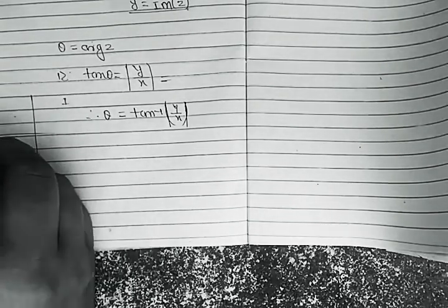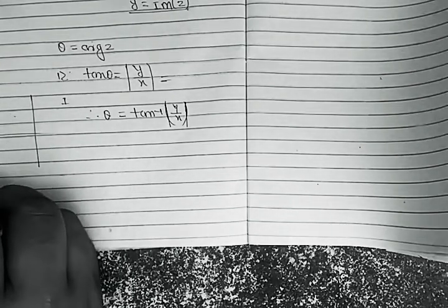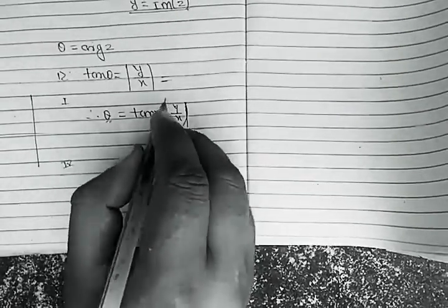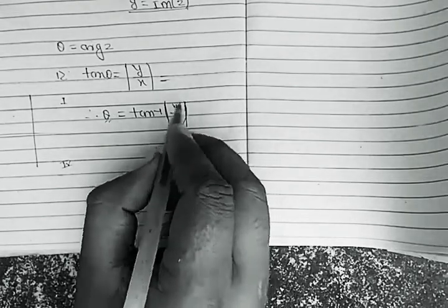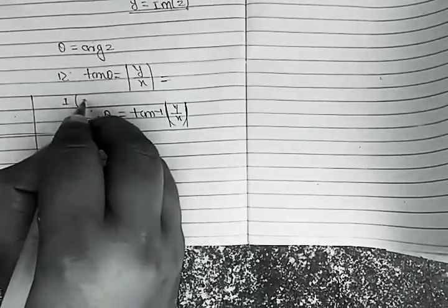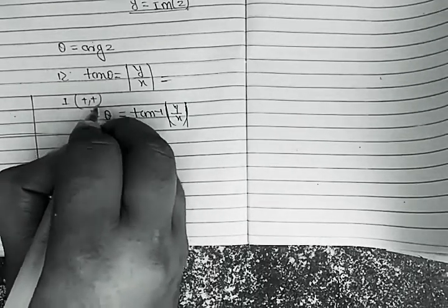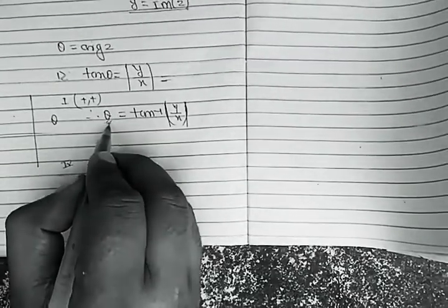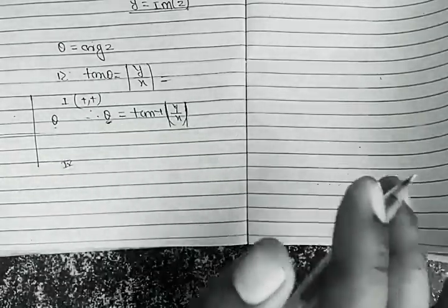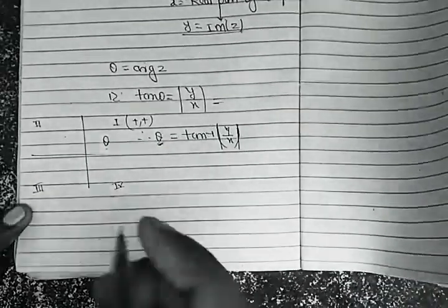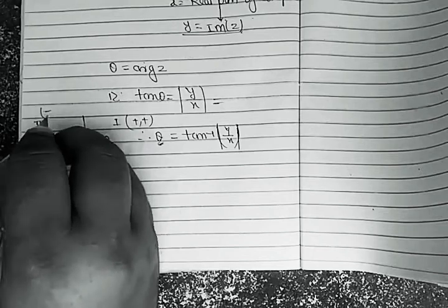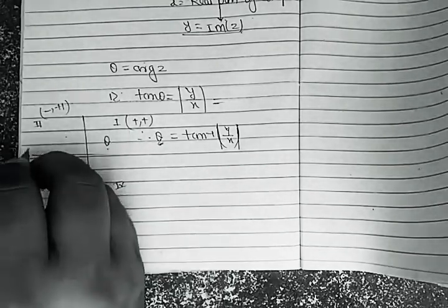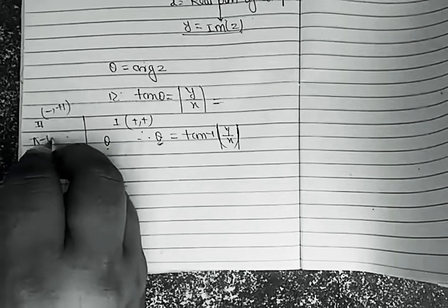You can see here: this is the first quadrant, this is the second quadrant, this is the third quadrant, and this is the fourth. If the complex number lies in the first quadrant — meaning both x and y are positive — then the argument equals θ. If the complex number lies in the second quadrant, then the argument equals π minus θ.